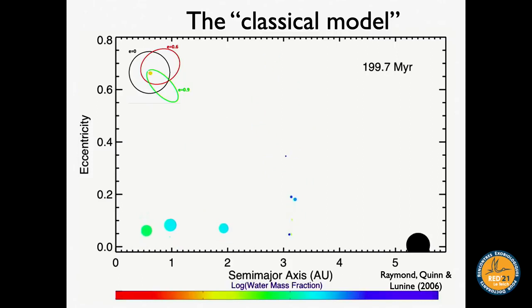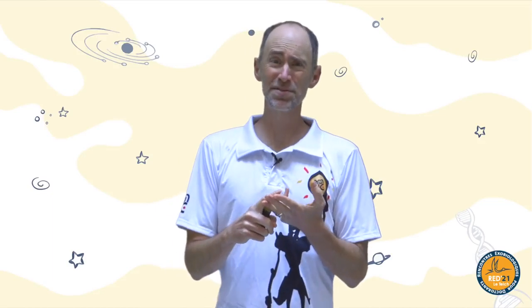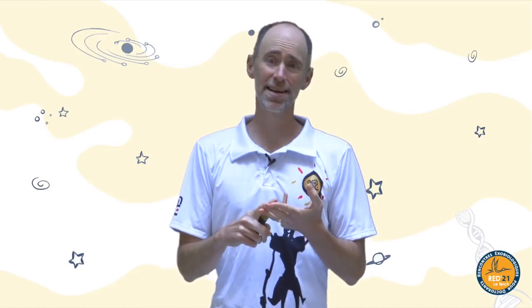Within about 100–200 million years the accretion phase wraps up. In this example we formed three terrestrial planets: two decent analogs for Venus and Earth, a third that's a very bad analog for Mars, and some leftover junk that you can squint at and call an asteroid belt.